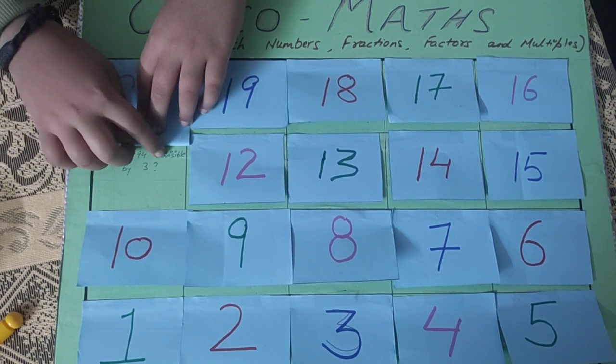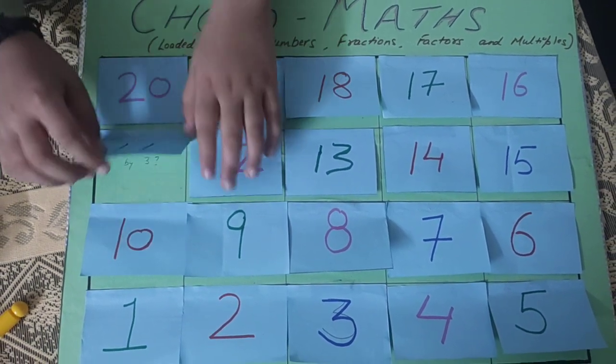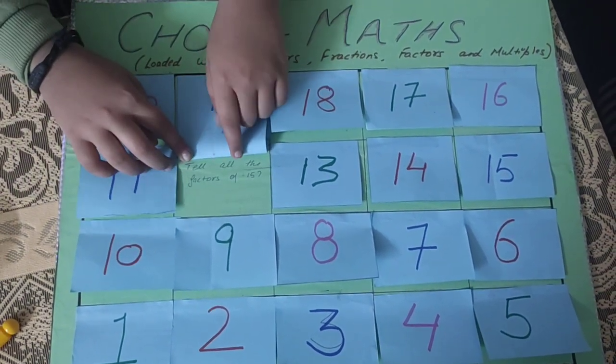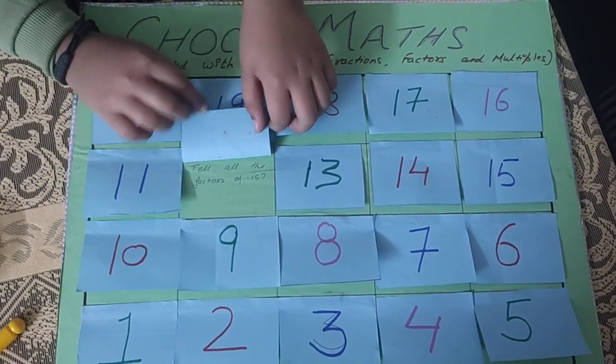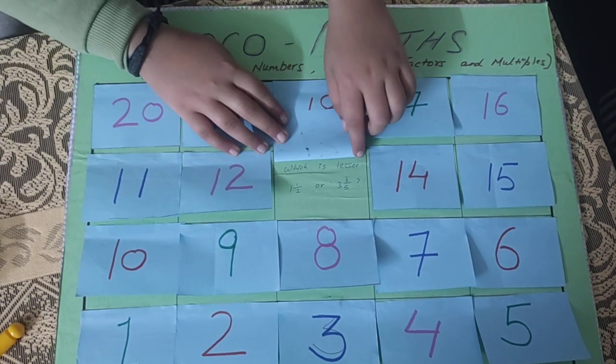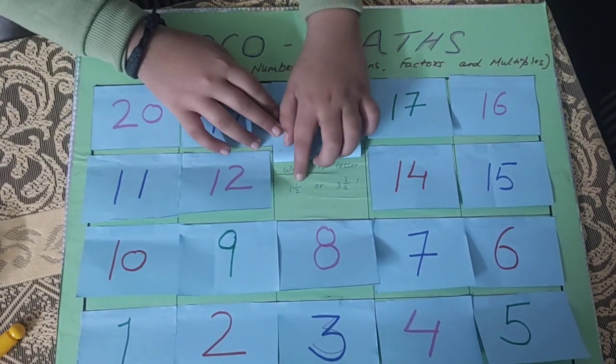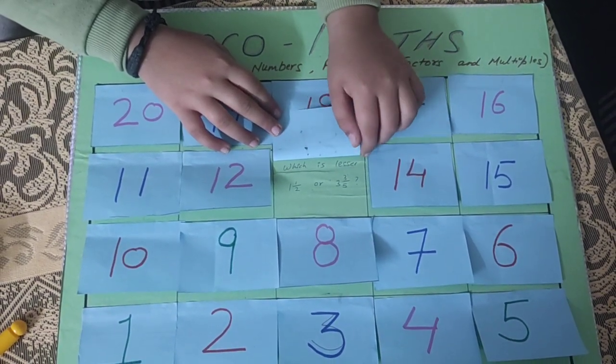Is 294 divisible by 3? Tell all the factors of 15. Which is lesser? 1 by 2 or 3 3 by 5?